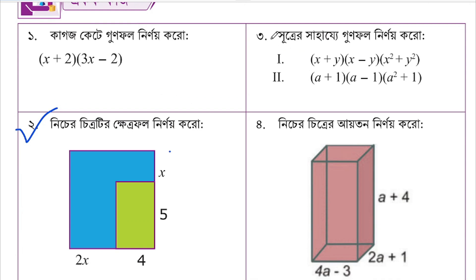3 numbers: 0, 1 number is x plus y into x minus y. A plus b into a minus b — let's see the shown.